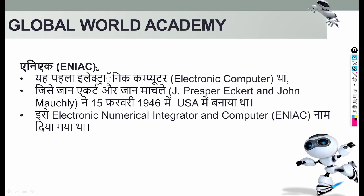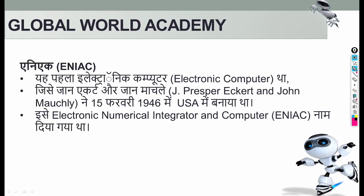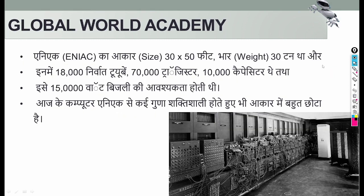ENIAC, EDSAC, EDVAC, and UNIVAC — along with ABC — are all first-generation computers, meaning they were designed between 1940 and 1956. If given four options, you can eliminate any dates outside that range. ENIAC was the first generation vacuum tube computer, designed in 1946 in the USA by Eckert and Mauchly. Its full form is Electronic Numerical Integrator and Computer. In size, it was as big as a room.